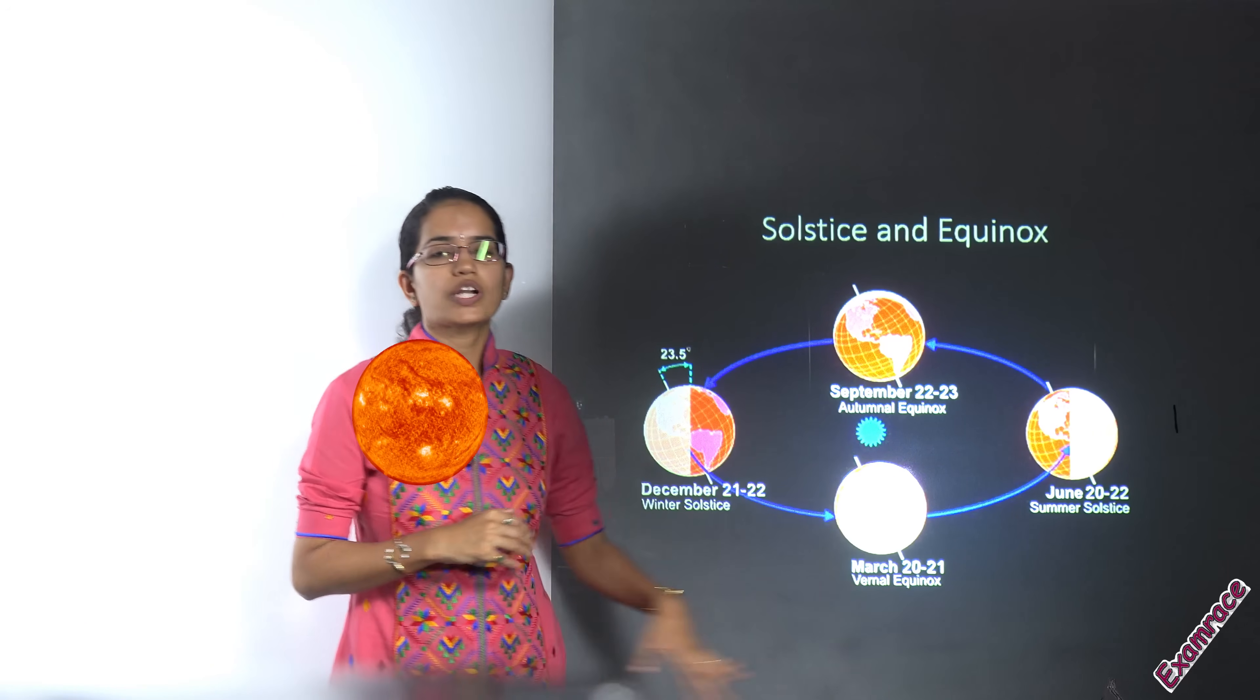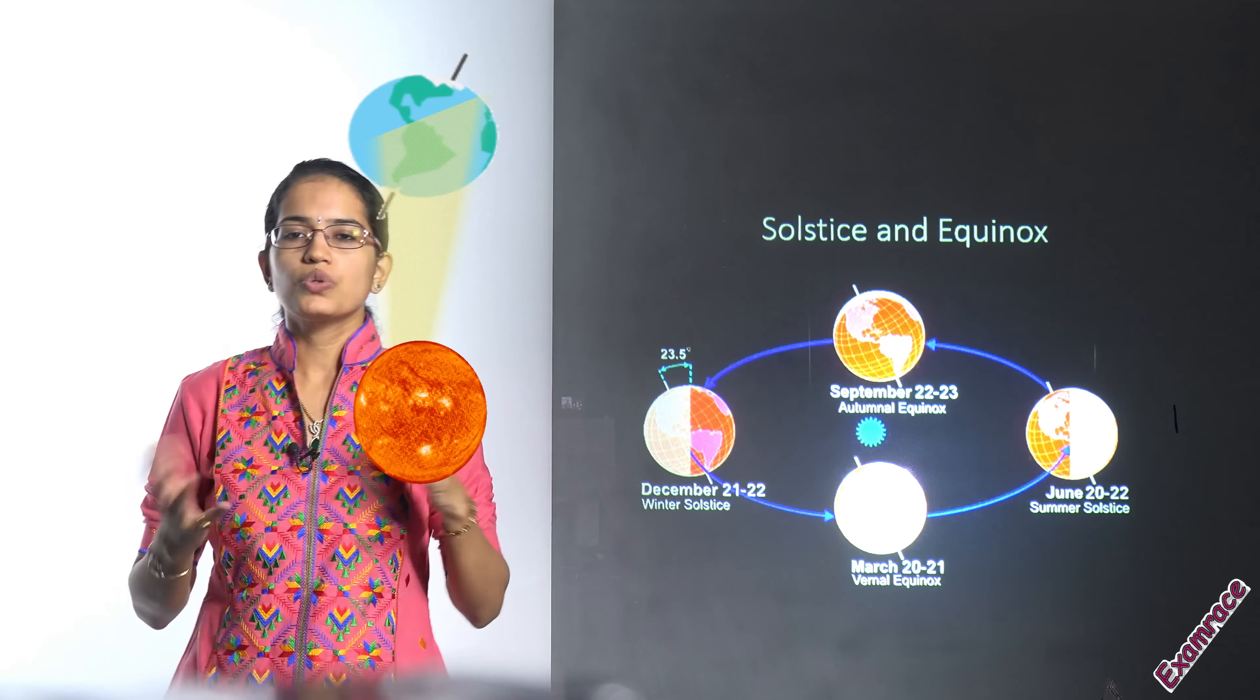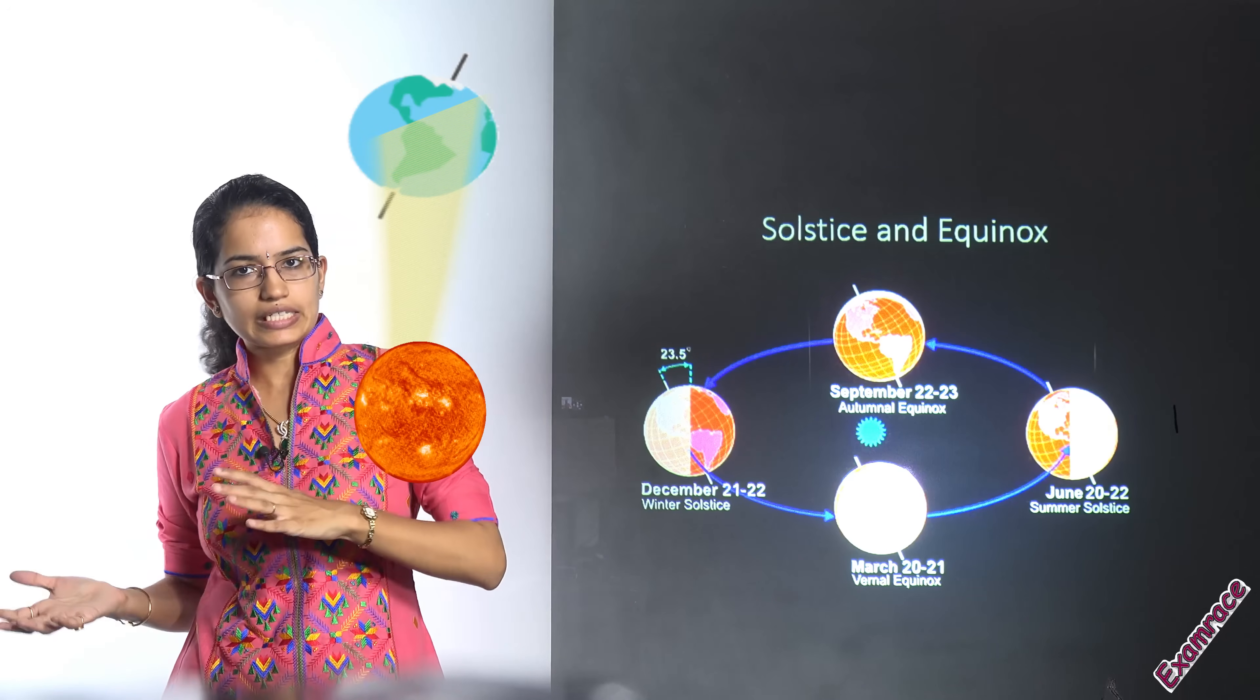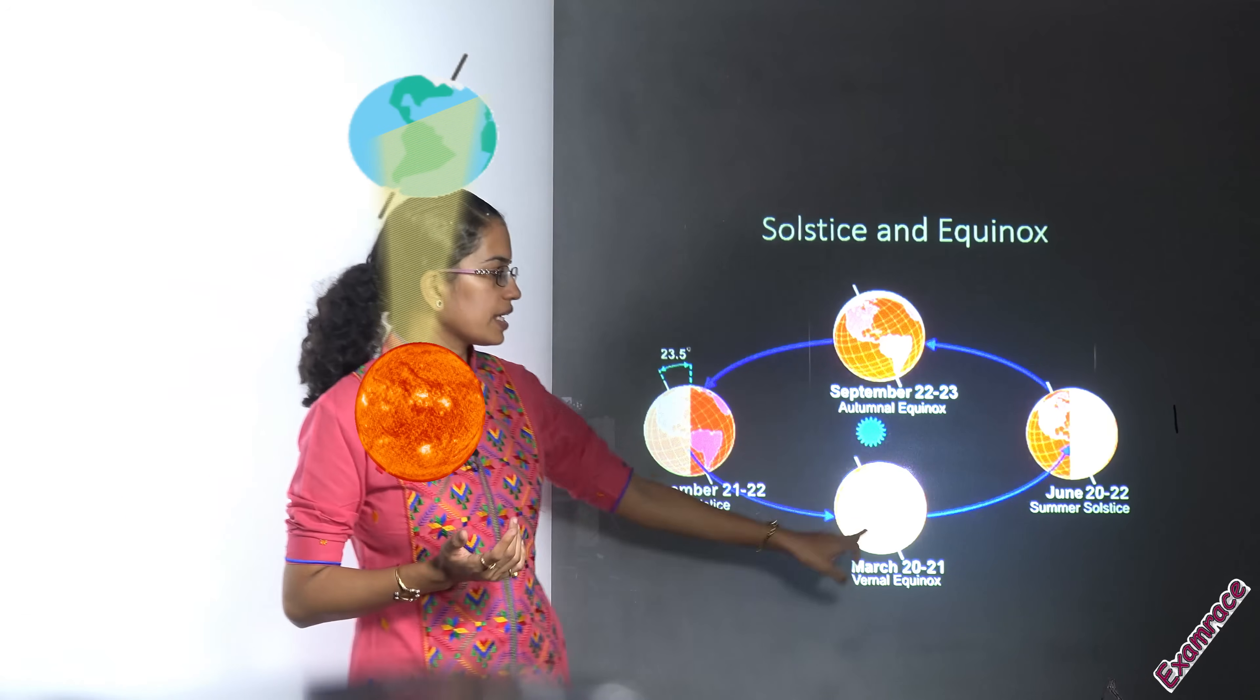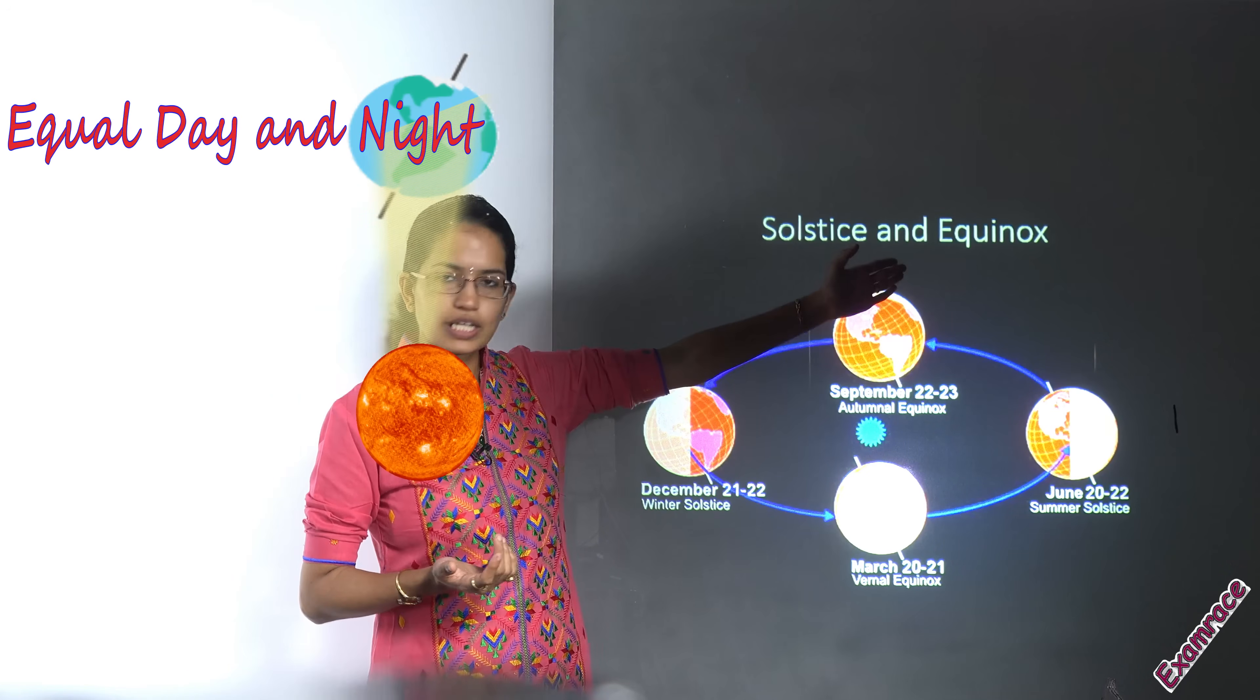When it comes to equinox, what happens is during the month of September and March you have equal days and nights that are seen. So sun being at an equal distance from here, you would have equal days and equal nights that would be seen.